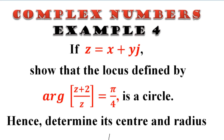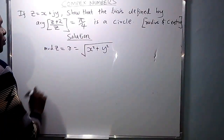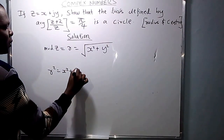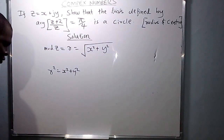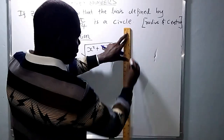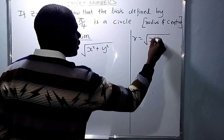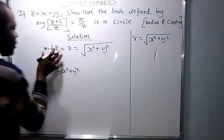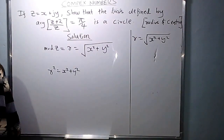From the Argand diagram, we relate the Cartesian form of a complex number to the polar form. The modulus of Z is found using the Pythagorean theorem, which gives R squared equals X squared plus Y squared. So R, which is the modulus of Z, is the square root of X squared plus Y squared.